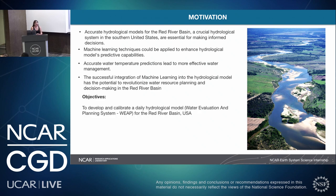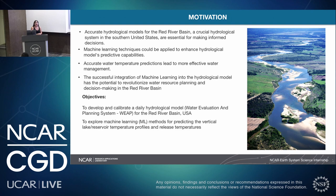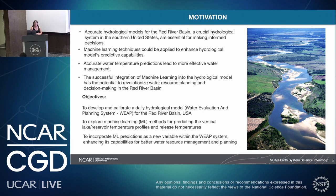The objectives of this research: First, to develop and calibrate a hydrological daily model in a software called WEAP — the Water Evaluation and Planning System — for the Red River Basin. Second, we want to explore how machine learning can help us predict temperatures in lakes and reservoirs to find the temperature releases and vertical profiles. And third, we want to explore how to incorporate machine learning techniques into a new variable of the developed hydrological model WEAP to enhance its capabilities for better water resources management and planning.